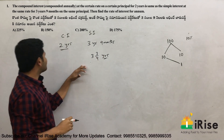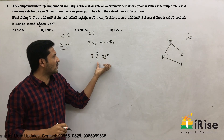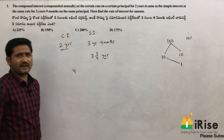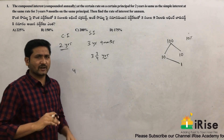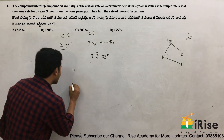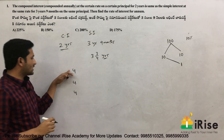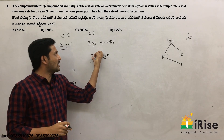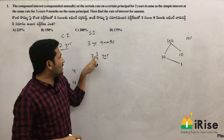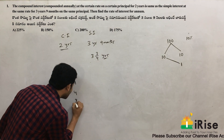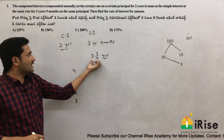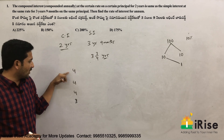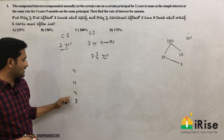So in this case, 2 years' compound interest equals 3¾ years' simple interest. For example, assume every year the simple interest is 4 units. So first year: 4, second year: 4, third year: 4, and for the remaining ¾ year: also 4 units. So 3¾ years' simple interest = 15 units.